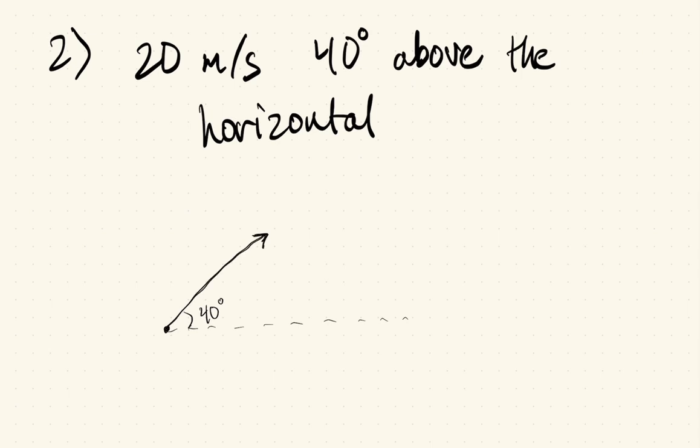I'm not drawing it on graphing paper or anything like that, but presumably this would represent 20 meters per second, the length of that vector. And of course, we can also have something like 40 degrees below the horizontal, which would then look like this.